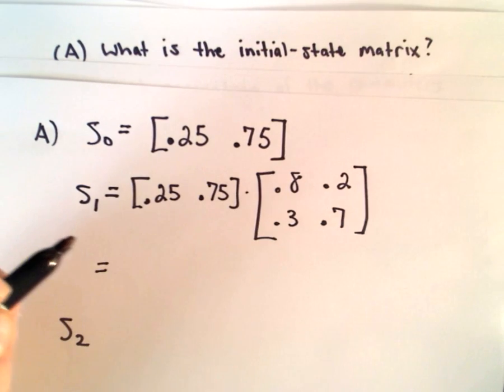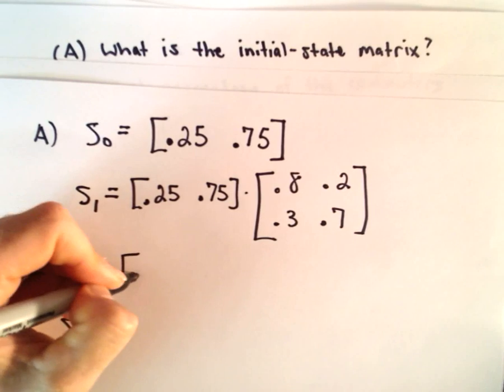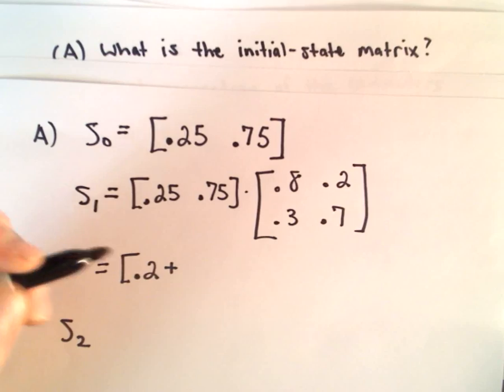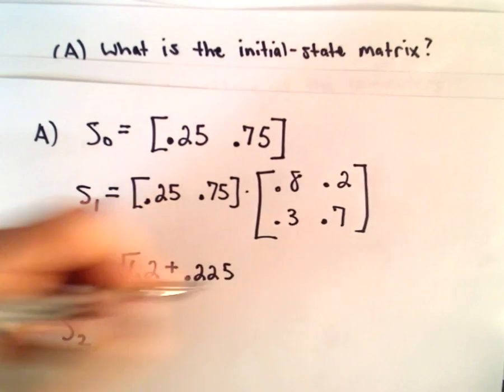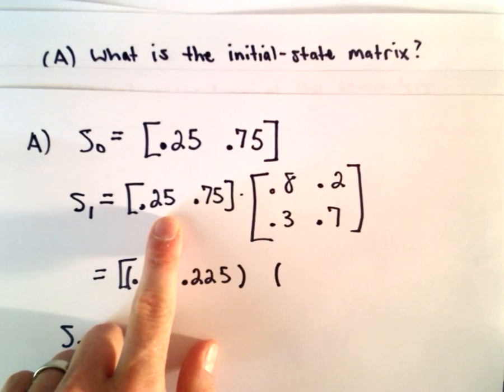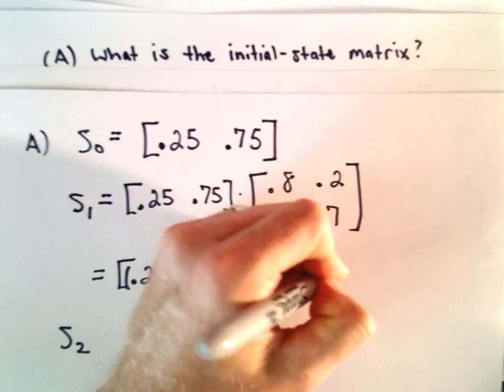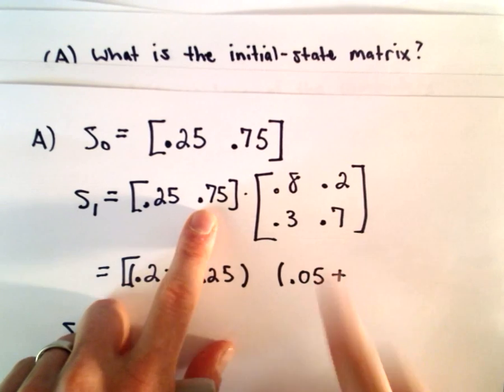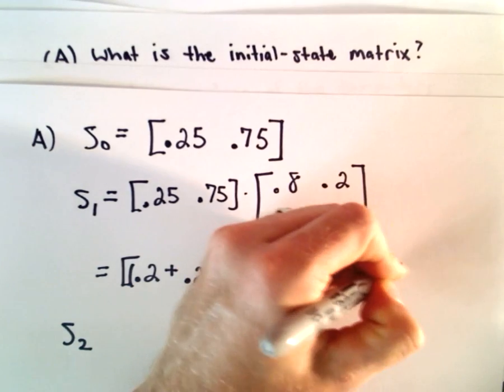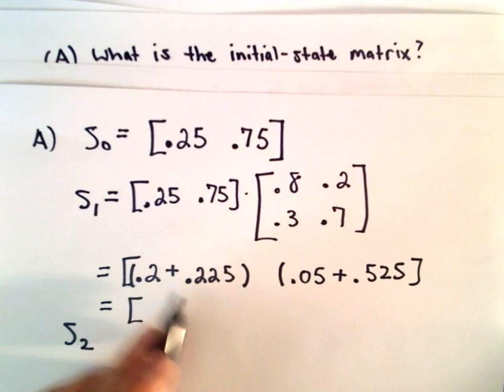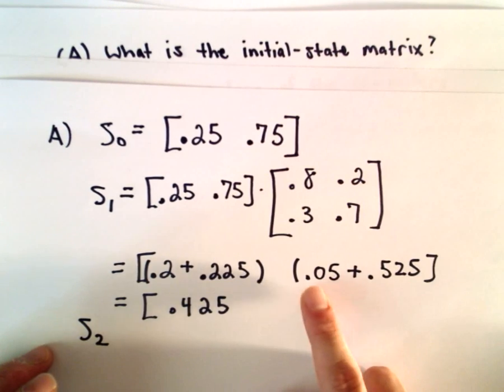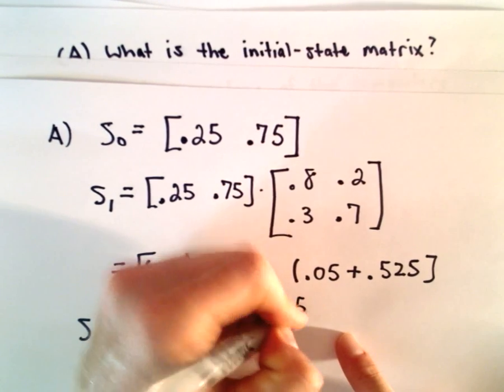Let's do the arithmetic. 0.25 multiplied by 0.8 gives us 0.2, and we'll add to that 0.75 multiplied by 0.3, which is 0.225. That's the first entry. Then we'll take 0.25 multiplied by 0.2, which is 0.05, and add 0.75 multiplied by 0.7, which is 0.525. So if we simplify, 0.2 plus 0.225 gives us 0.425, and 0.05 plus 0.525 gives 0.575.